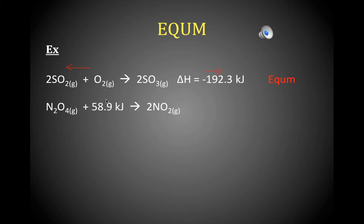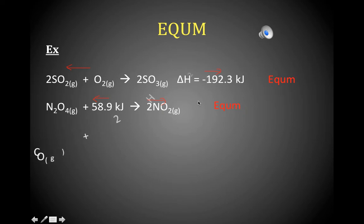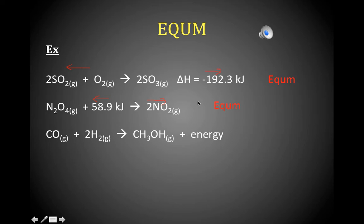The next example: energy favors the right — wait, actually the energy is endothermic so it favors the reverse reaction. But here we have one mole of gas on one side and two moles of gas on the other, so disorder favors the right. Another tug of war — another equilibrium. The following example: energy is exothermic, favors the right; we have three moles of gas versus one mole of gas, which favors the left. Equilibrium again. You might guess it's always equilibrium — but that won't always be the case.